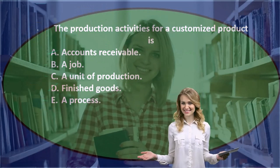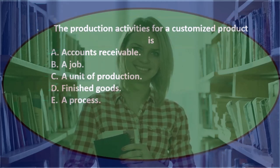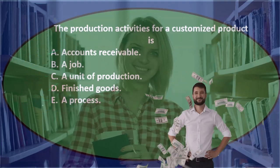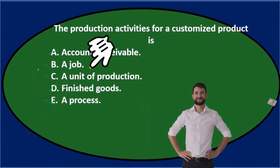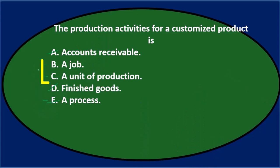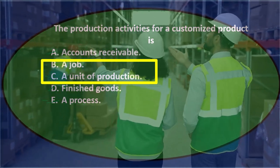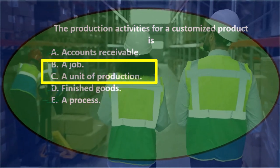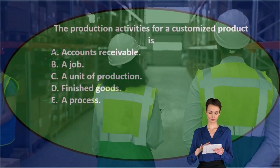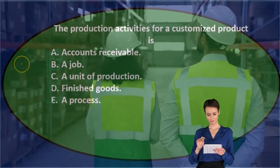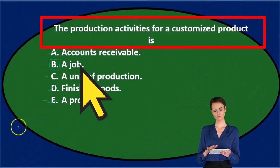The production activity for a customized product — when we think of a customized product, we're thinking about a job cost system, probably not a process cost system. So I think we can eliminate E, and then it's between a job and a unit of production. These two are kind of like the same thing — a unit of production is one thing we're working on, but it's more specifically termed a job. So final answer: the production activities for a customized product is B, a job.